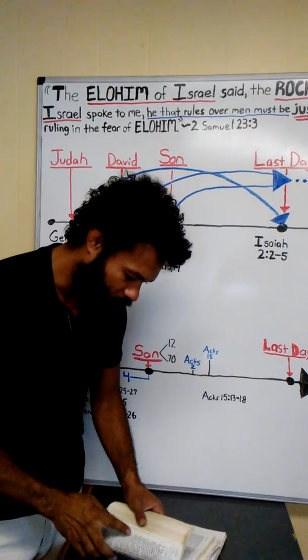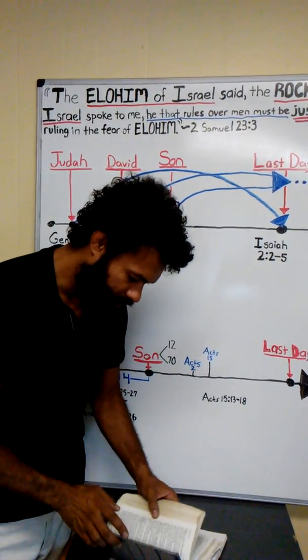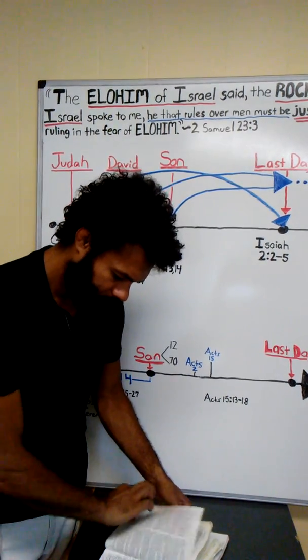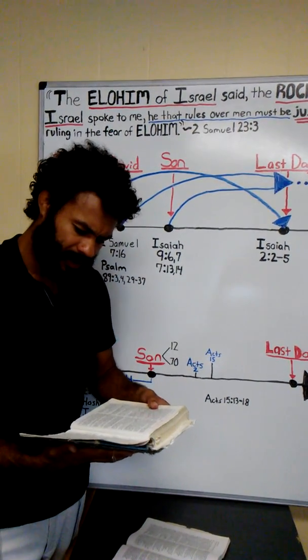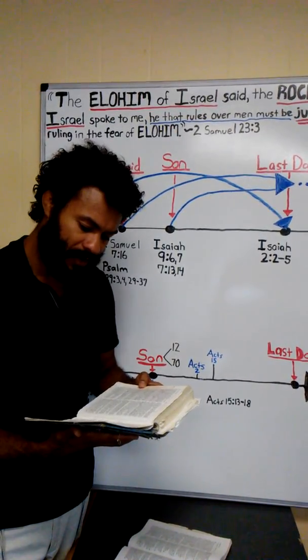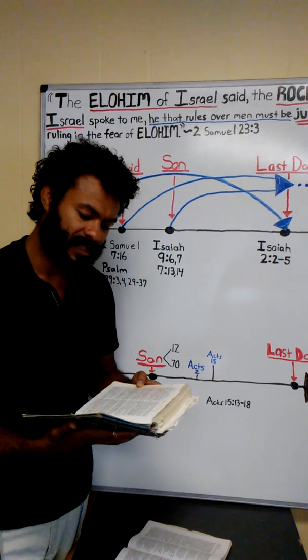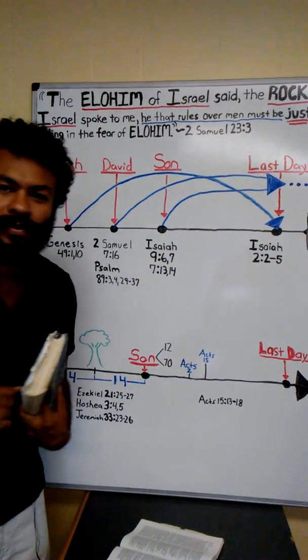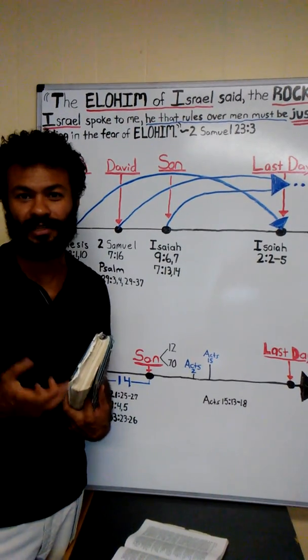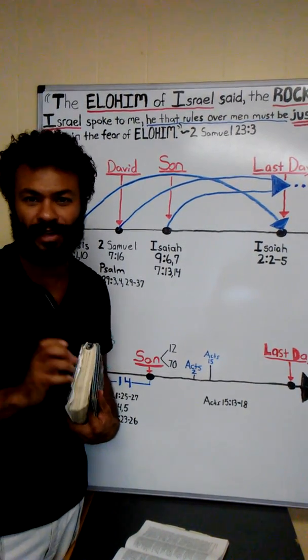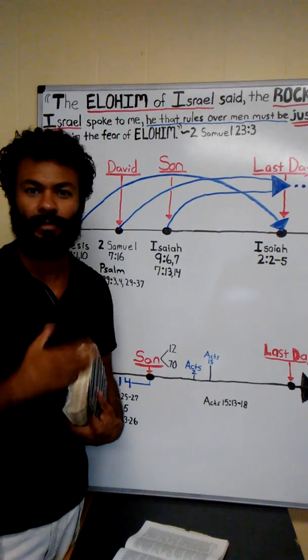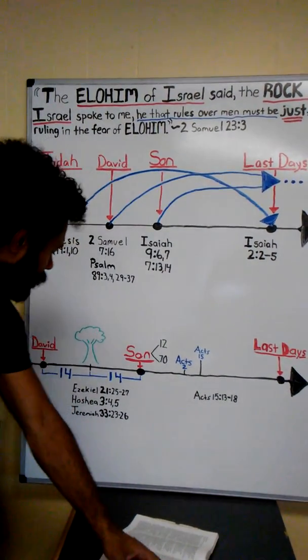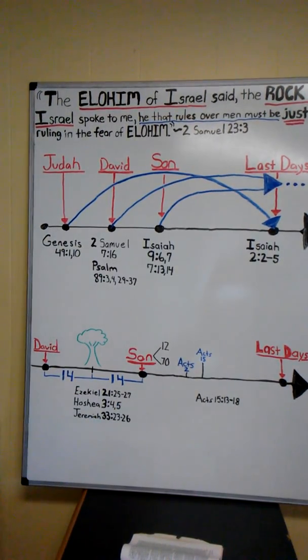Revelation chapter 14: I looked and saw the lamb standing on Mount Zion, and with him the 144,000, having his father's name written upon their foreheads. So here we see at the end of the age, the 144,000, which actually represent the government of Yahuwah, because the number 12 represents government. And 12,000 from each tribe of Israel shows that he established his government, his kingdom upon the earth.